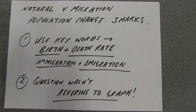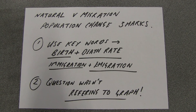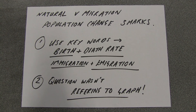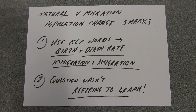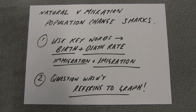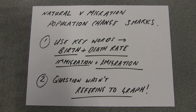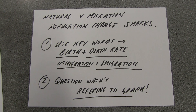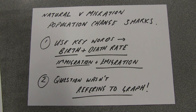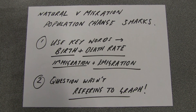Right, we'll start off nice and simple. The first questions that you had were those simple three mark questions. It said what was the difference between natural population change and migration population change. Now most of you recognised that there was a difference between the two. Remember natural population change is the difference between births and deaths. That could be natural increase or decrease.